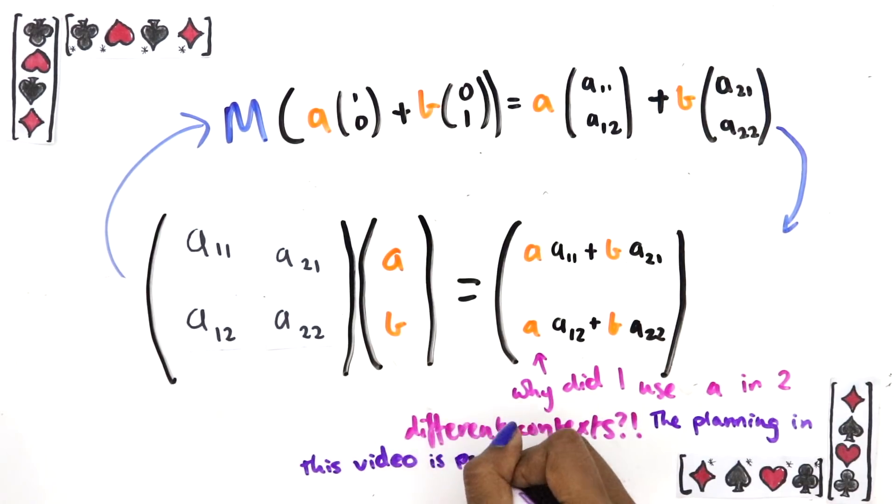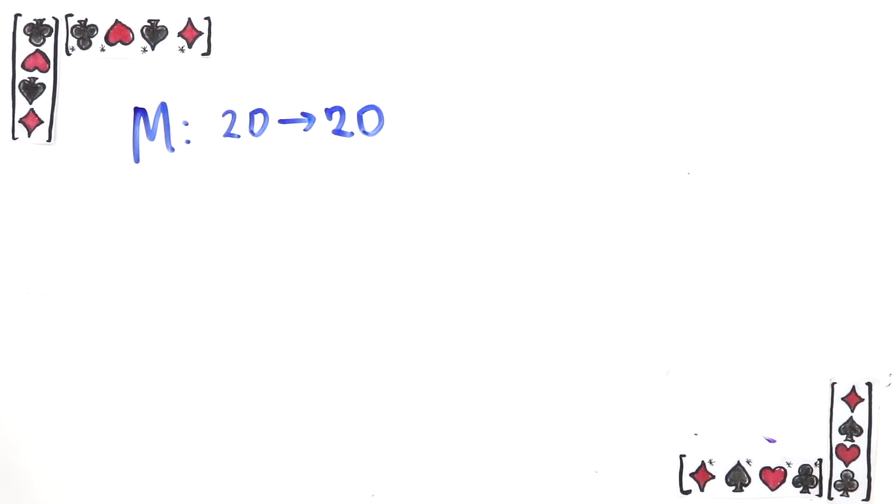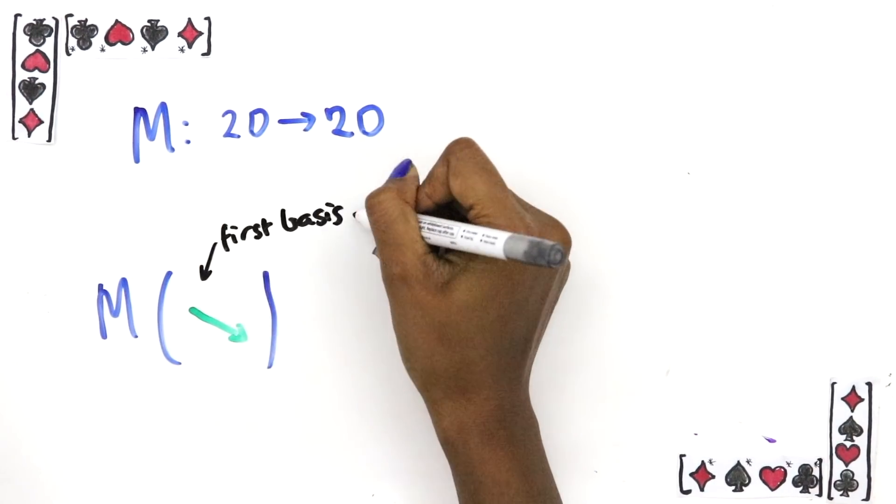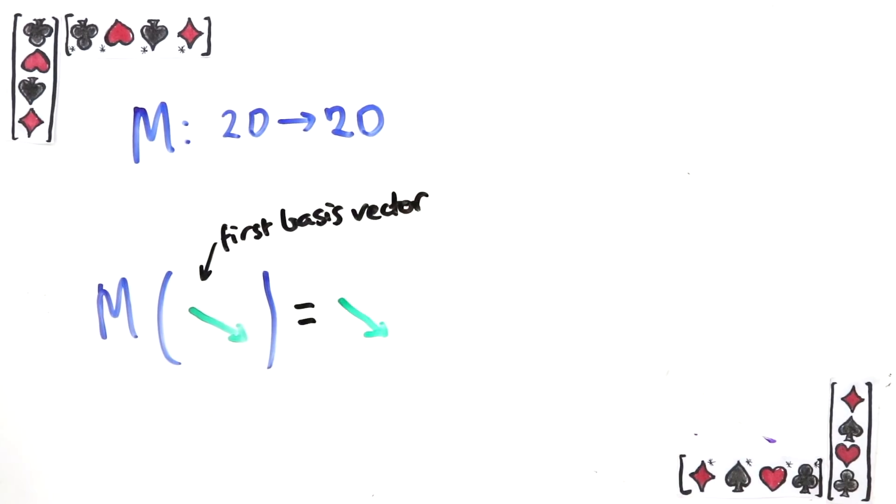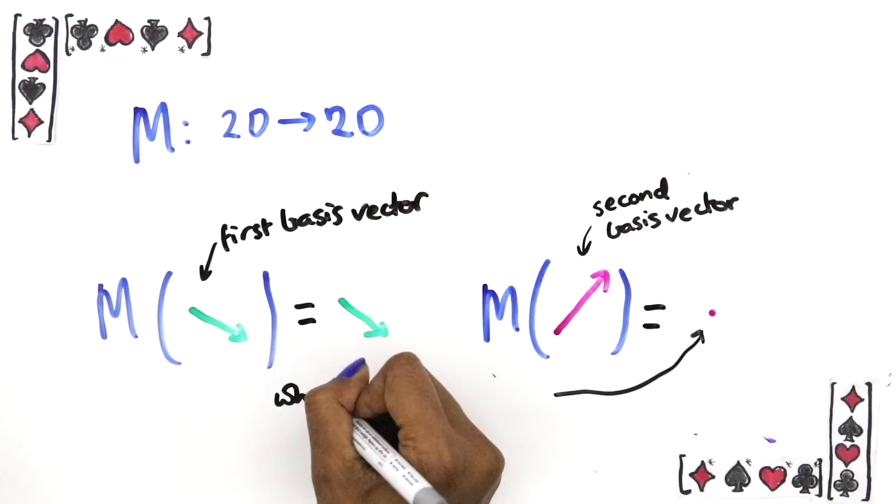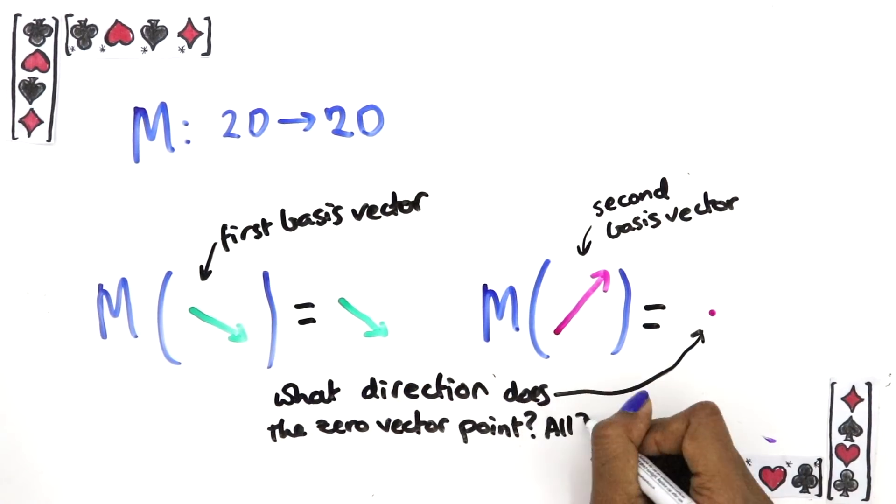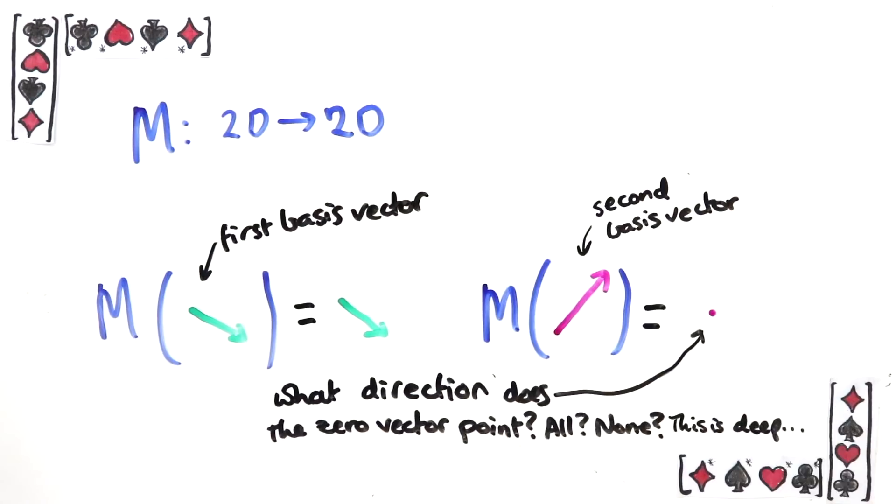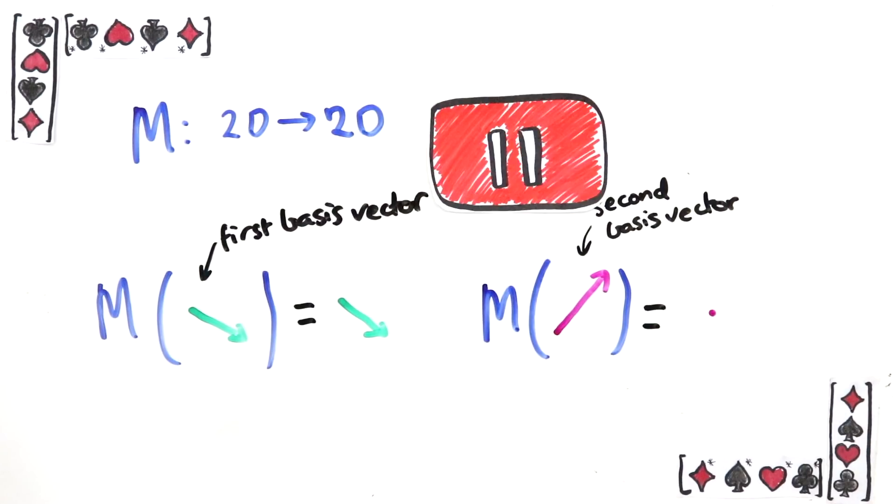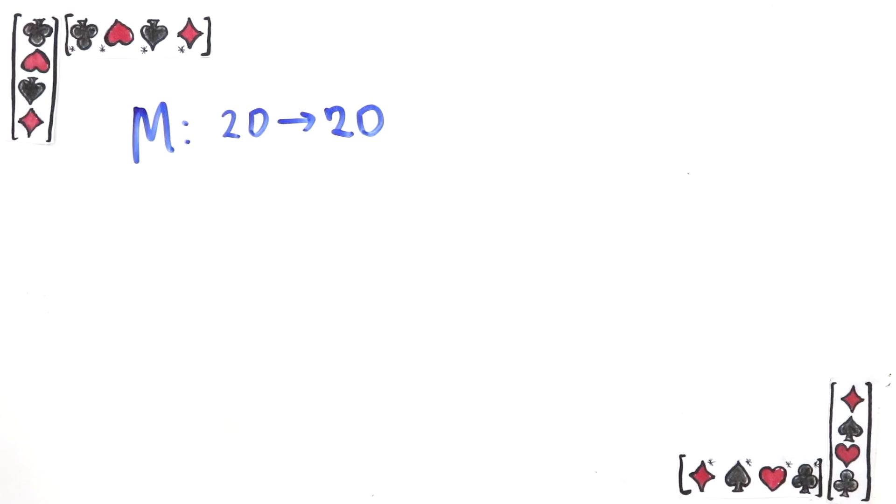To see if you've got all this, see if you can come up with a matrix for the following linear transformation. It takes the first basis vector and does nothing to it, and takes the second basis vector and deletes it. Another way of thinking of that is it takes the second basis vector to the zero vector, the vector with no length. Pause the video now and try and come up with a matrix in this basis. So hopefully you've had a think. The answer is this.